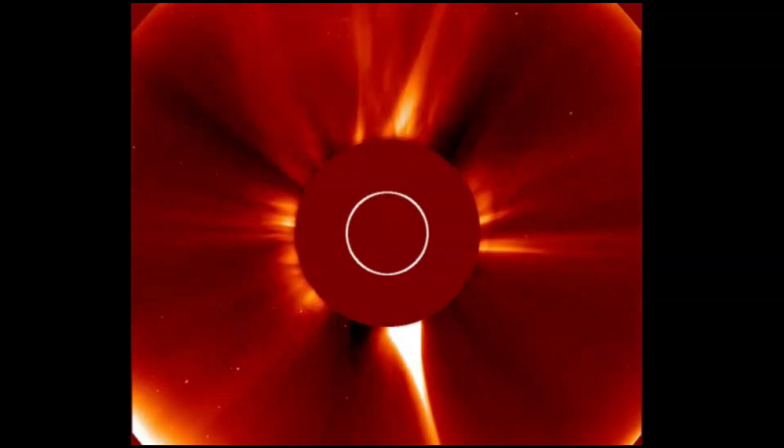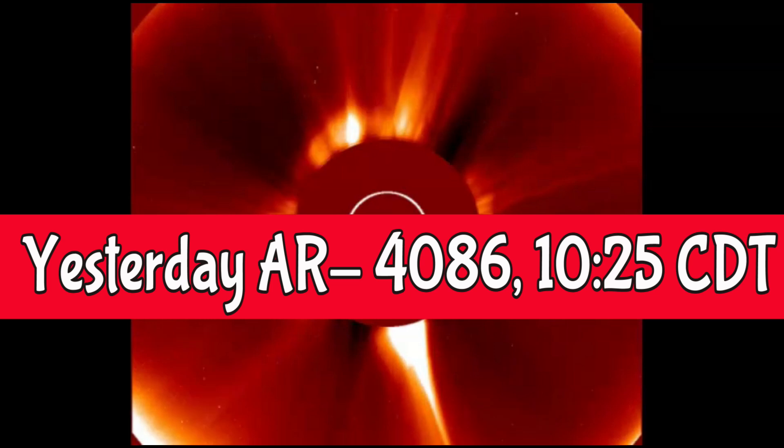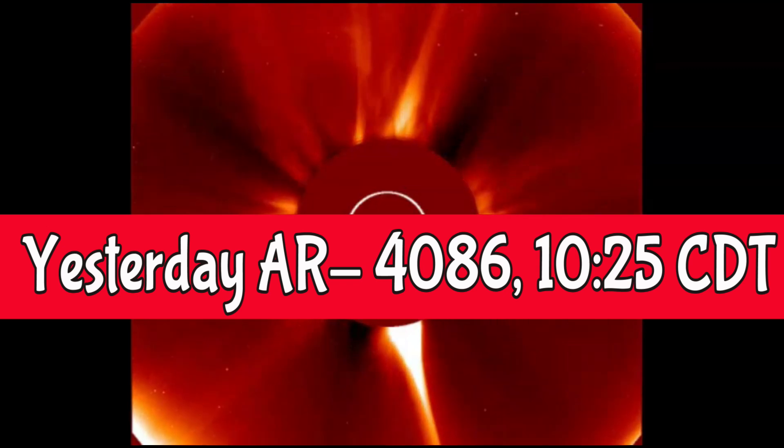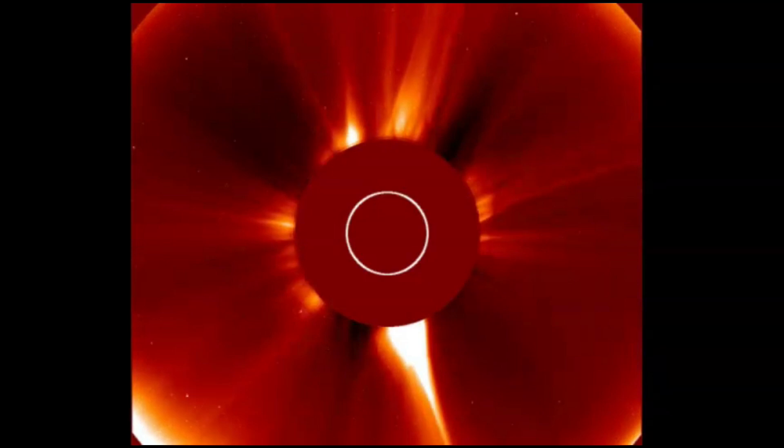They rocked the sun. The first one was at 1525 Universal Time, or 10 a.m. Central Daylight Time. It came from sunspot region AR 4086 as it began to rotate out of view in the west.